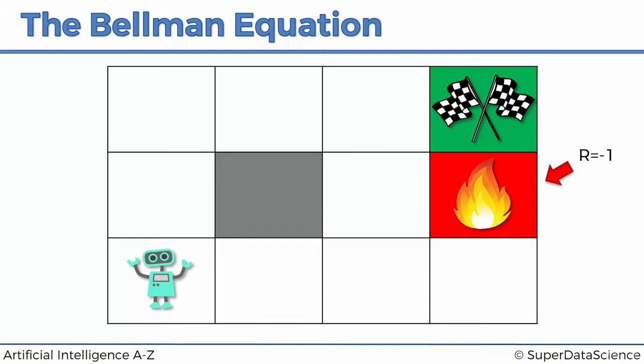So in the fire pit, the reward R is minus one. That's our way of telling the agent that's not something we want you to do — like when we're training dogs, we tell them 'bad dog' if they're not doing the right thing. Same thing here. Every time the agent ends up in that square, it'll get a minus one reward — it will be punished. On the other hand, if it ends up in the green square, it'll get a plus one reward, meaning that is what we want it to do. So those are the two rewards the agent can possibly get.